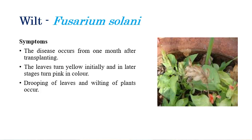The first disease is wilt, which is caused by Fusarium solani. The prominent symptoms associated with wilt are drooping of leaves and wilting of plants. When it comes to Crossandra, the disease starts one month after transplanting. The symptoms are quite common — drooping of leaves as well as wilting of plants.